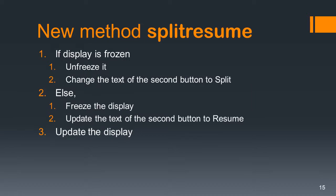Most of the work is going to be done in this new method, which is called split_resume. The way it's going to work is: first, we check if the display is frozen. If it is, we want to unfreeze it and then change the text of the second button to split. Else, we want to freeze the display and update the text of the second button to resume. In either case, we want to update the display.